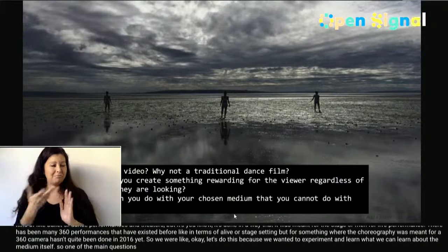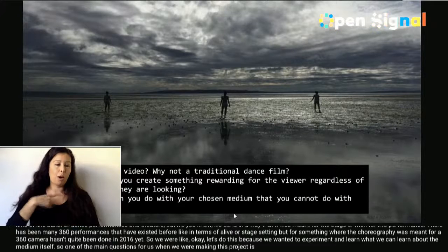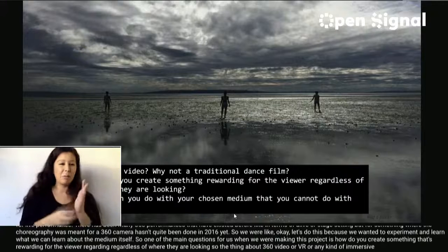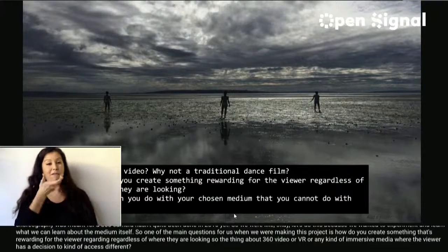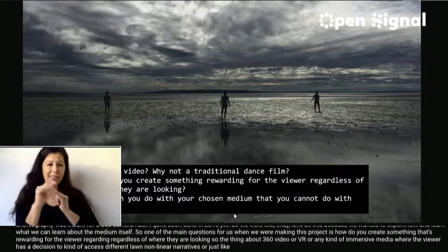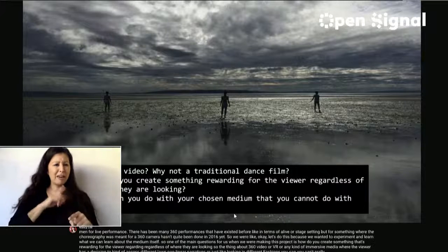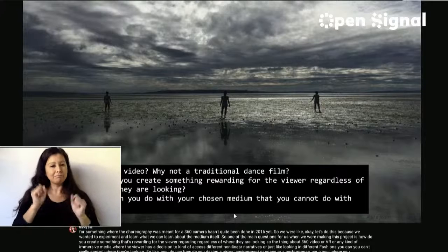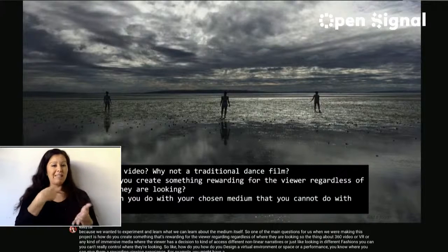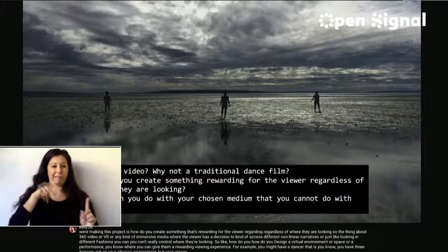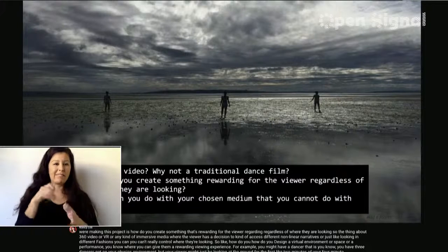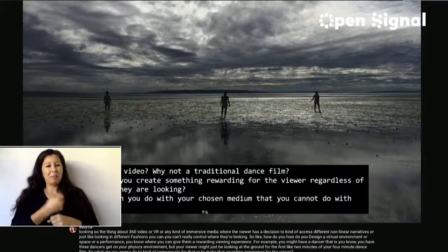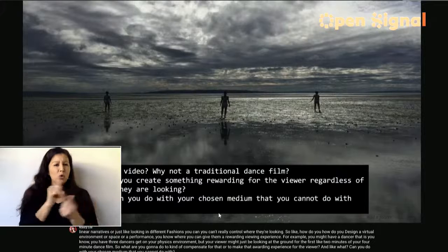One of the main questions was: how do you create something that's rewarding for the viewer regardless of where they're looking? With 360 video or VR, you can't control where viewers look. How do you design a virtual space or performance where you give them a rewarding viewing experience? For example, you might have three dancers scattered in your 360 environment, but the viewer might be looking at the ground for the first two minutes of your four-minute dance film. What can you do with your chosen medium that you cannot do with others?